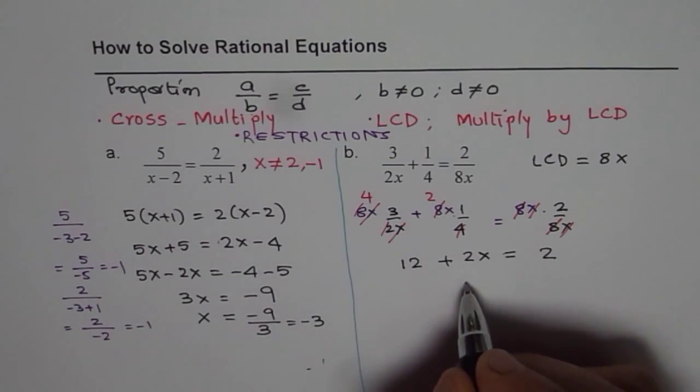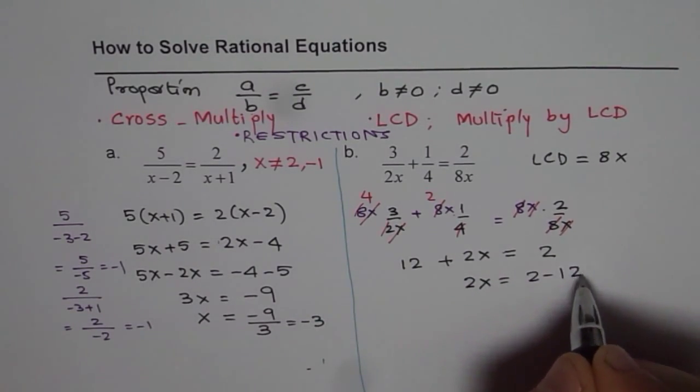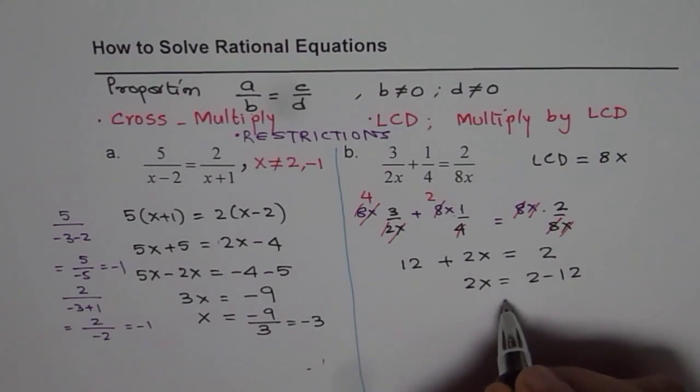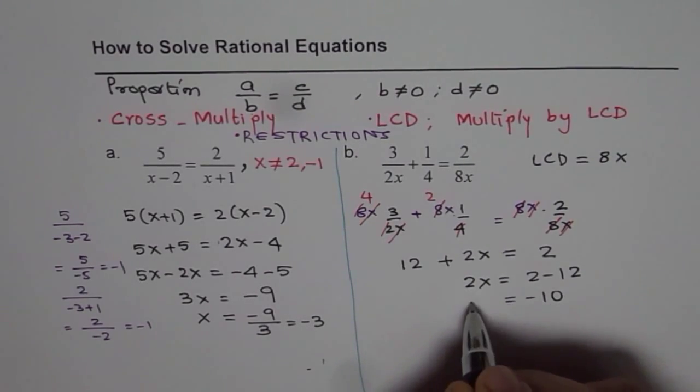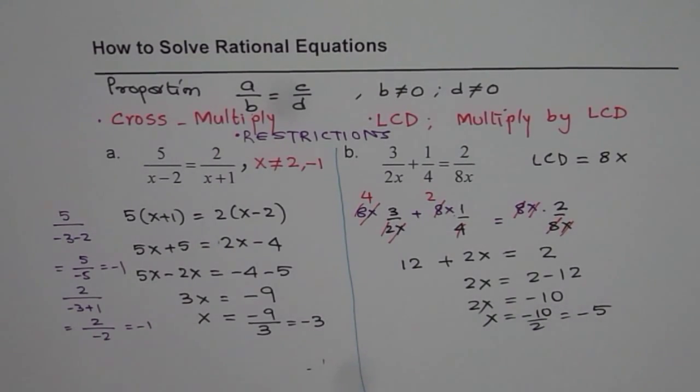Now you can combine the like terms and solve. So you get 2x equals 2 minus 12, which is negative 10. And x is equal to minus 10 divided by 2, which is minus 5.